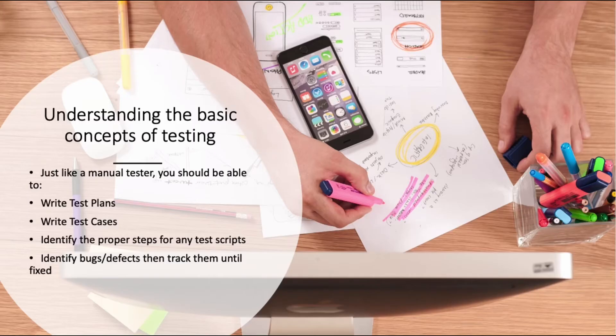Understanding the basic concepts of testing. You are a coder who also knows how to test, so it's important you don't forget about the testing part. Just like a manual tester, you should be able to write test plans, write test cases, identify the proper steps for any test scripts, identify bugs and defects, then track them until fixed. Your job is to catch any bugs and defects as early as possible in a software development lifecycle process. Make sure complete testing coverage exists between the manual and automated tests.